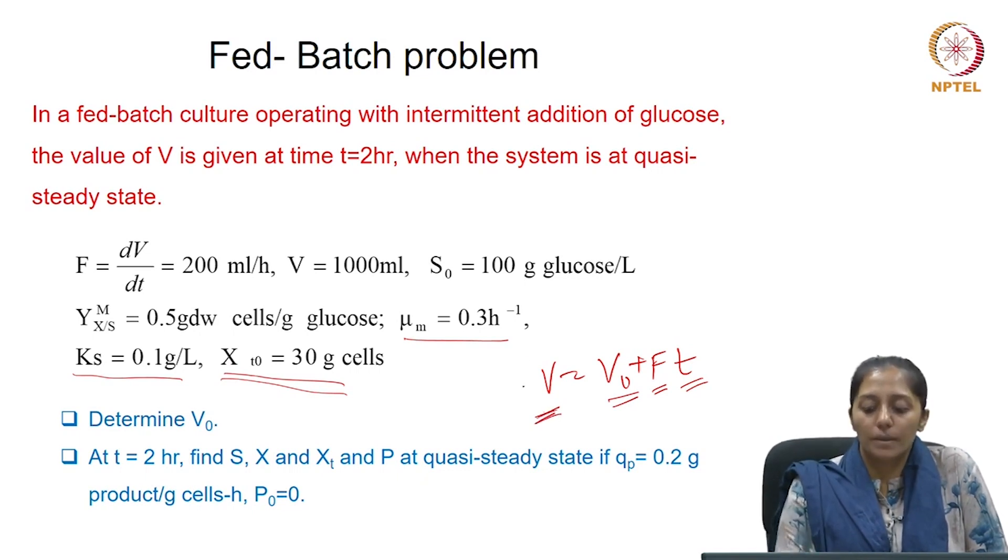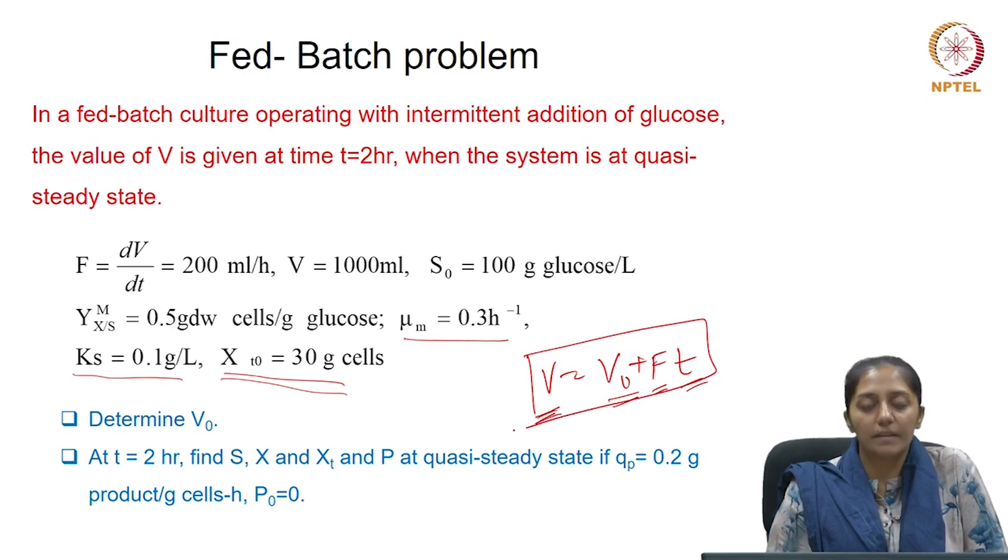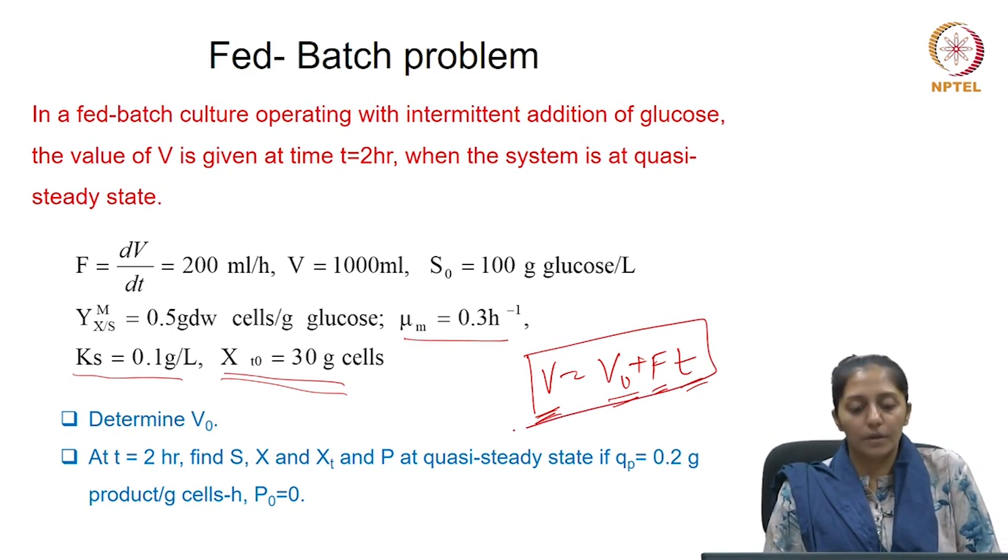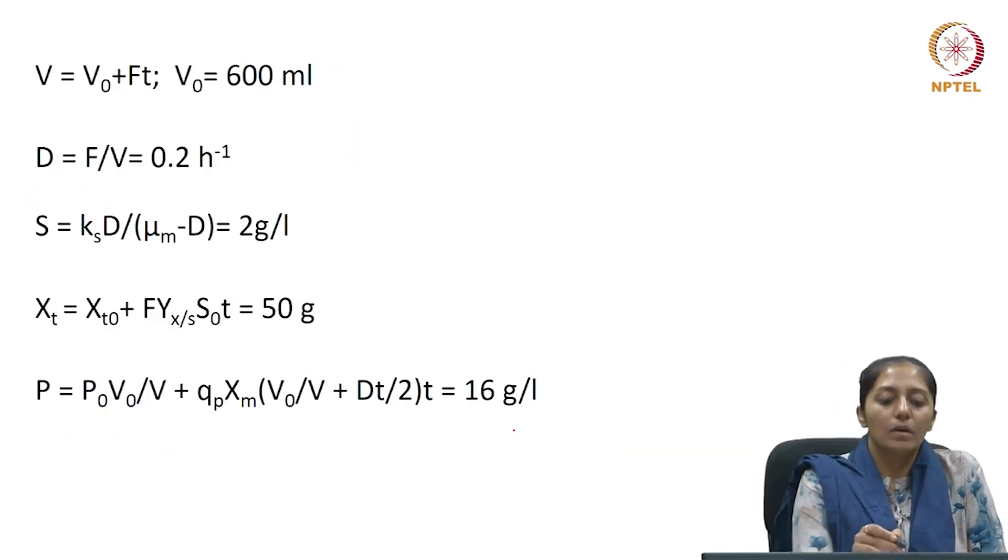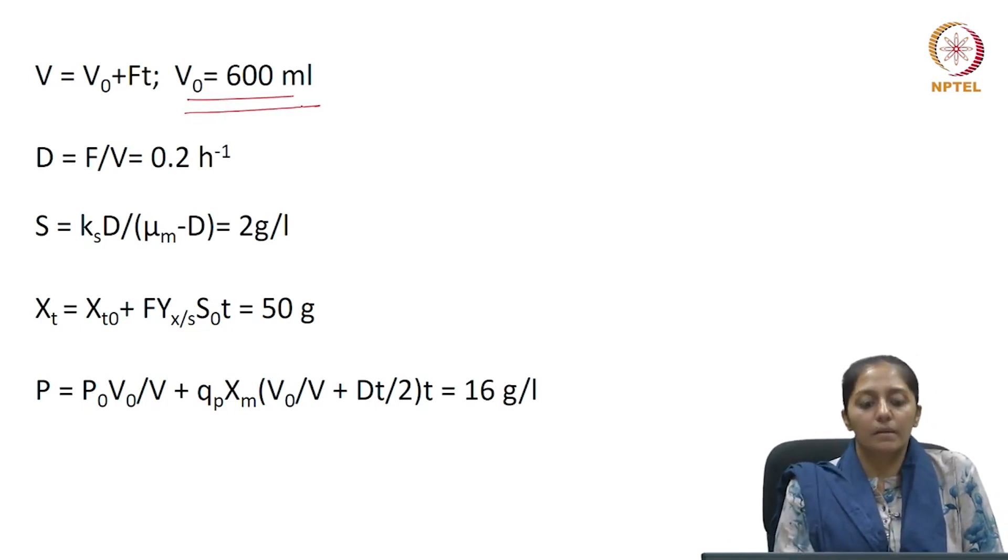So, if you substitute all the values, we will be able to find the value of V₀. So, your V₀ turns out to be 600 ml when the quasi-steady state began.